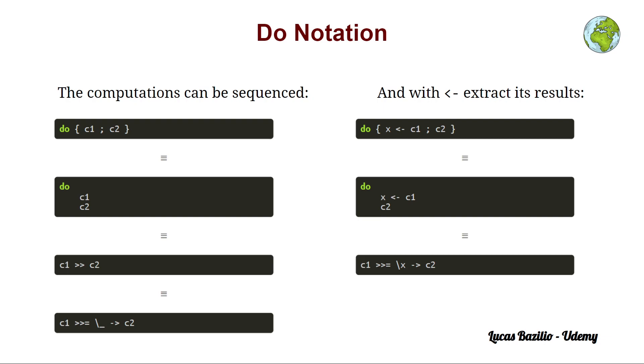In fact, people that work with Haskell do not call this instruction x takes the value C1, because it is not an assignment either. It's called, between the workers and programmers of Haskell, a binding, because we tie the result of C1 to x. And this here, in functional notation that we already know, is by definition equivalent to this here.